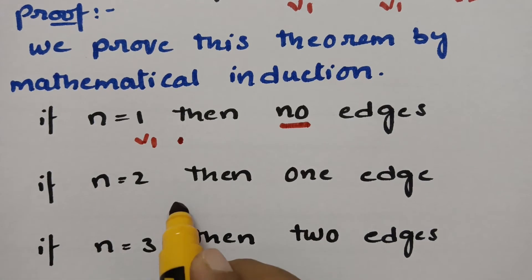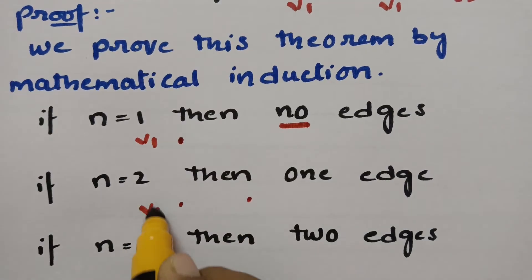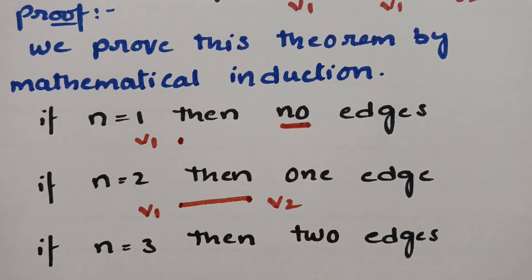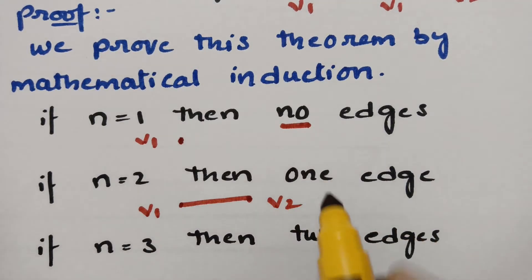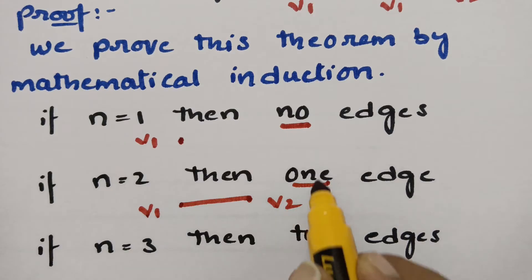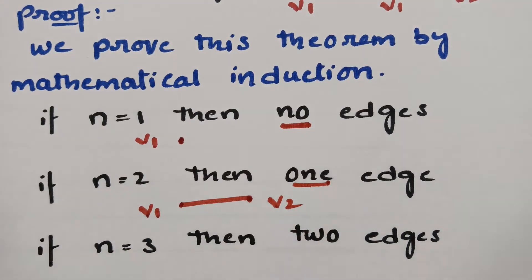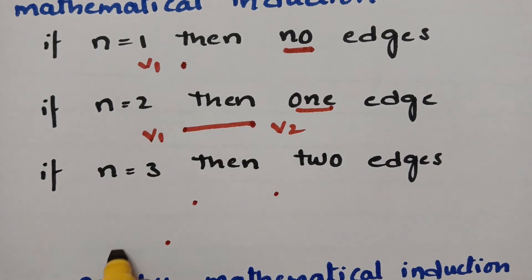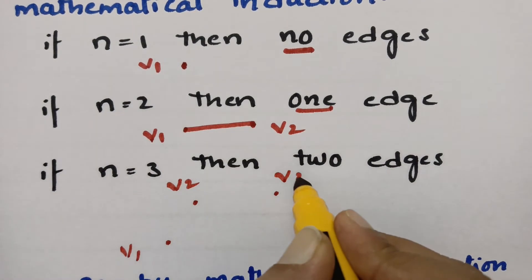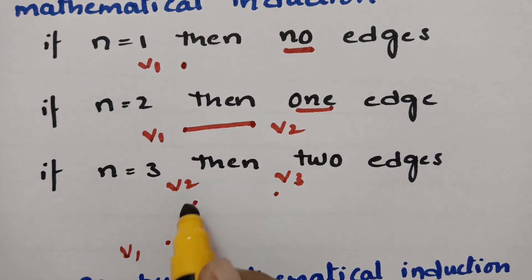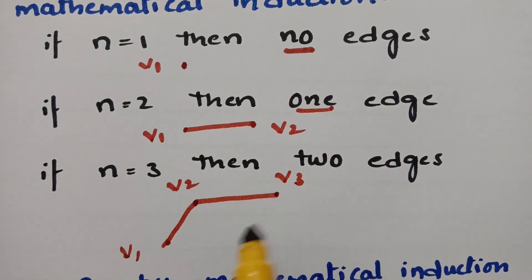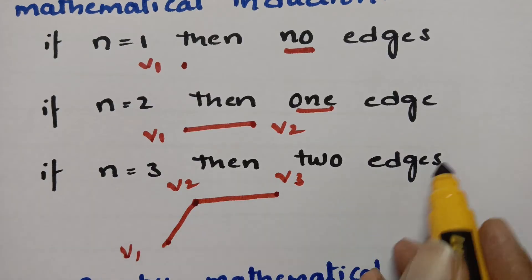If n equals 2, I take two vertices v1 and v2, and I can connect these two with one edge or line — so I have only one edge. If n equals 3, I take three vertices v1, v2, and v3. I can connect two vertices with one edge and another two with one edge, giving a total of two edges.